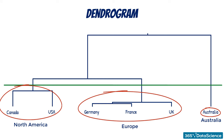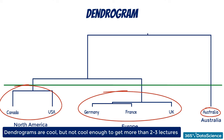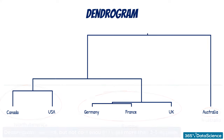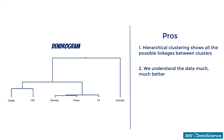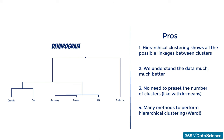When most people get acquainted with dendrograms, they like them a lot. Let's see some pros and cons. The biggest pro is that hierarchical clustering shows all the possible linkages between clusters, which helps us understand the data much better. Moreover, we don't need to preset the number of clusters — we just observe the dendrogram and take a decision. Another pro is that there are many different methods to perform hierarchical clustering, the most famous of which is the Ward method. Different data behaves in different ways, so it is a nice option to choose the method that works better for you. K-means is a one-size-fits-all method, so you don't have that luxury.